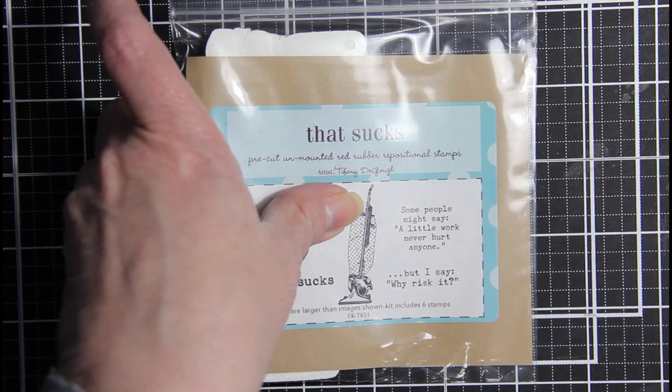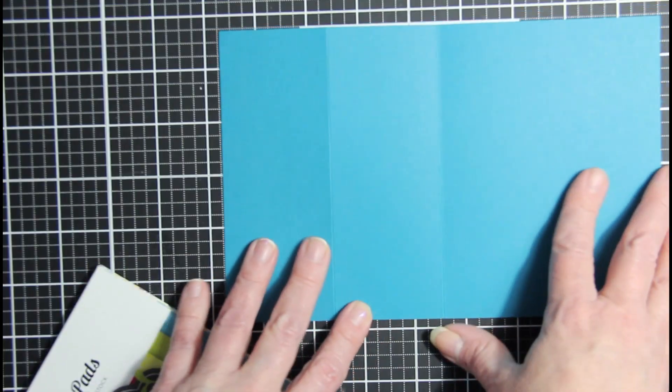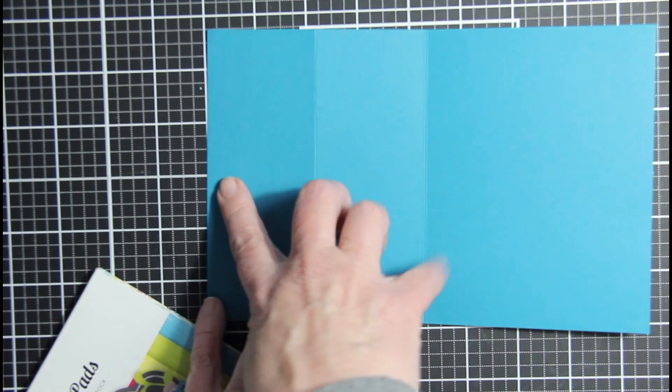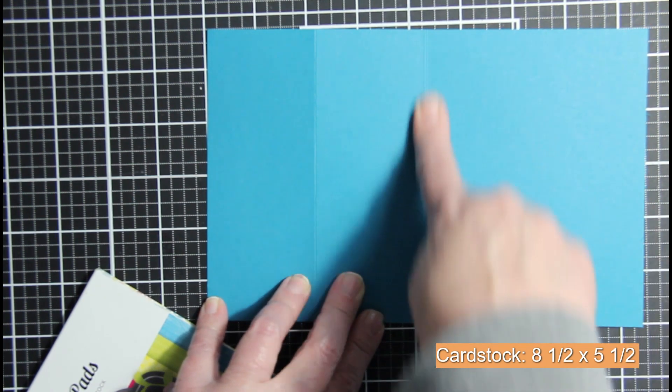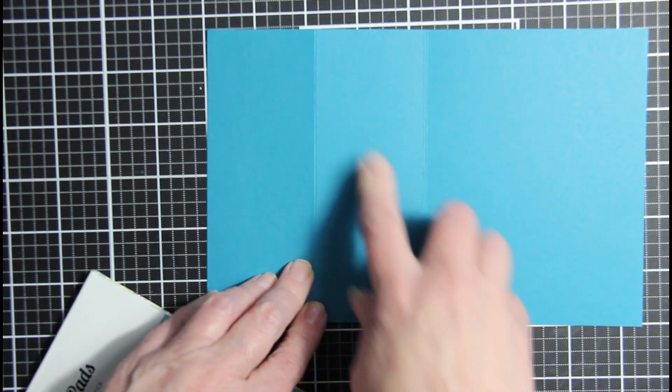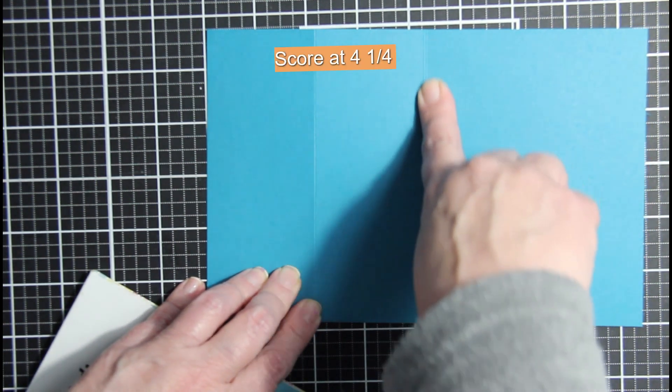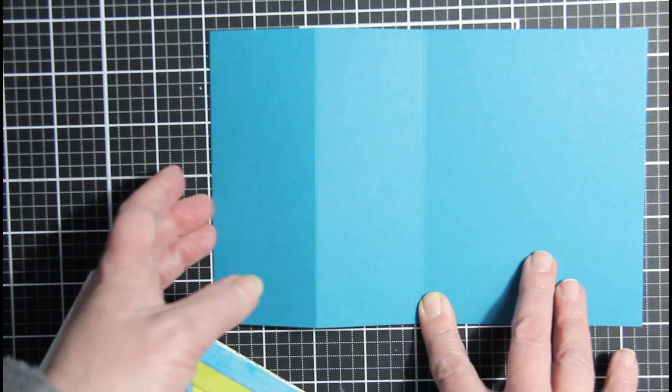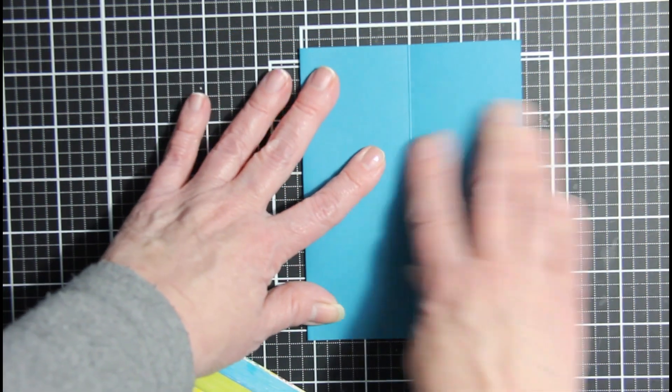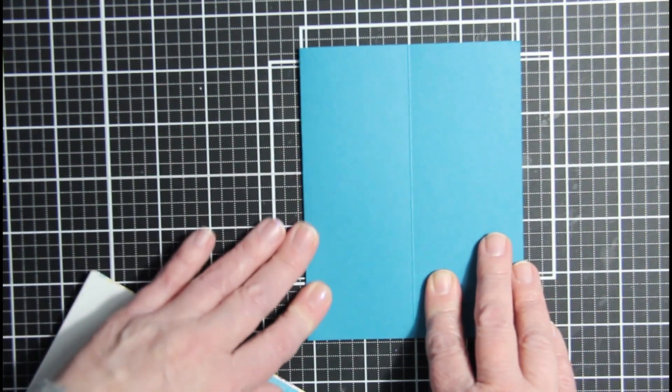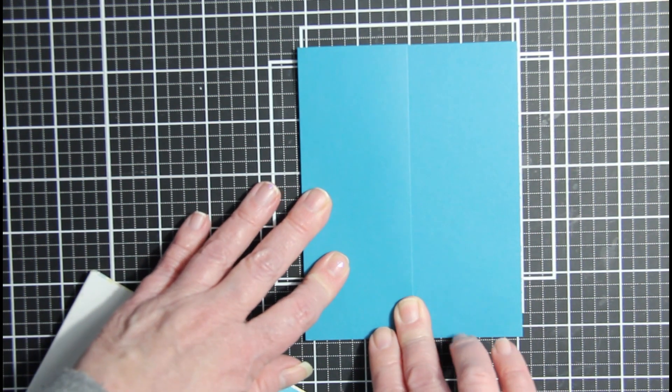So, for my fancy fold card, I am going to show you this is 8 1⁄2 by 5 1⁄2. I have scored it at 2 1⁄8 and 4 1⁄4. So, when it folds over, it is an A2 size card, but we have scored this to fold it back for a flap.